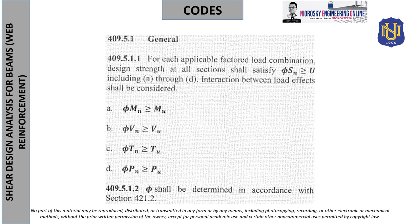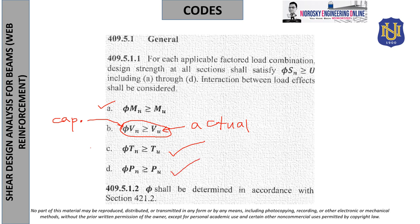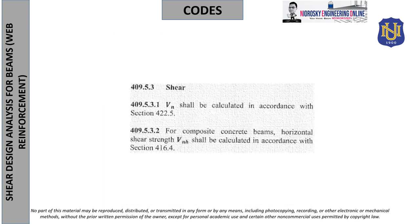Under code 409.5.1, the ultimate demand should not exceed capacity. The left side represents the capacity and the right side reflects the actual demand. There is moment, torsion, and actual force as well. It is very important to understand the reduction factor — it is different for shear. For shear, VU divided by phi gives the nominal shear, per 409.5.3.1. Whenever we design stirrups — the shear carried by the stirrups or the steel shear — it should be under nominal, similar to how we bring moment back to nominal.